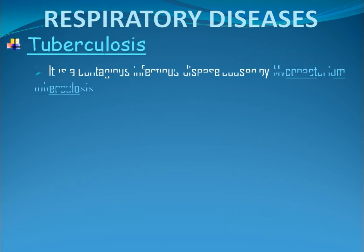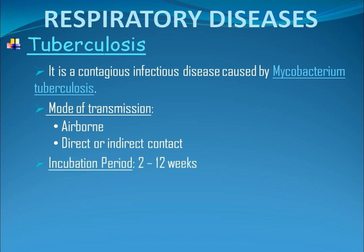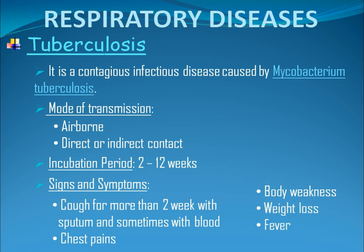Tuberculosis. It is a contagious infectious disease caused by Mycobacterium tuberculosis. The bacteria usually attack the lungs but can also damage other parts of the body. Mode of transmission: It is airborne. Direct or indirect contact with the infected person. The incubation period may vary from about 2 to 12 weeks. The infected person is still contagious as long as bacteria are present in the sputum. Signs and symptoms: cough for more than 2 weeks with sputum and sometimes with blood, chest pains, body weakness, weight loss, fever, and night sweats.